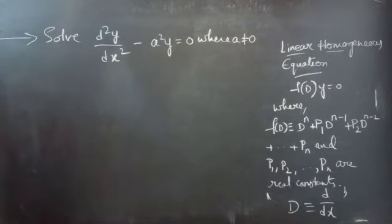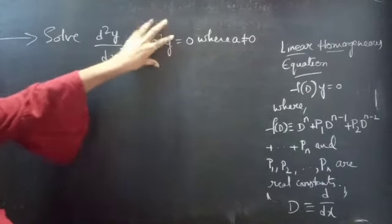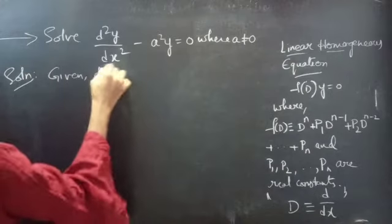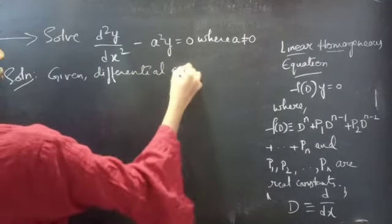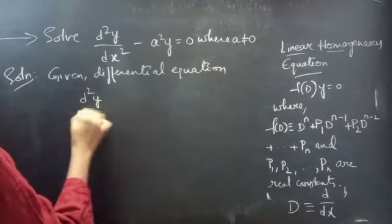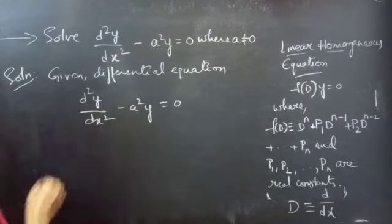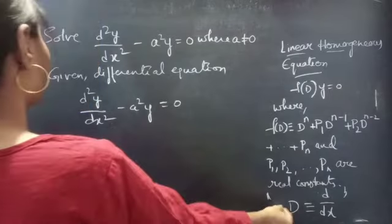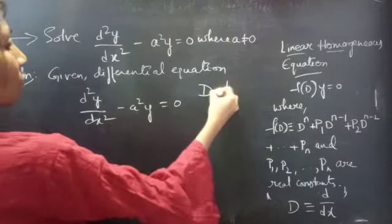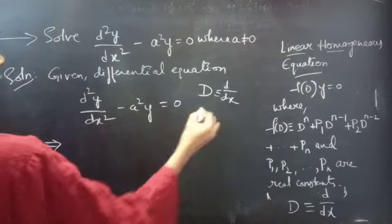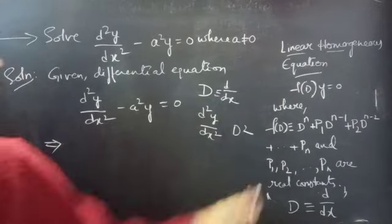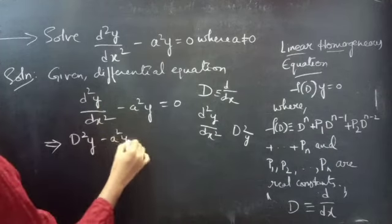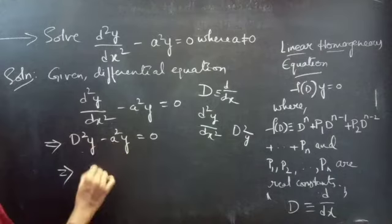What happens if a equals zero? This term gets cancelled and the equation becomes zero. Now, for the solution, since d/dx equals capital D — the differential operator D — we can write d²y/dx² as D² times y. So this becomes D²y minus a²y equals zero.